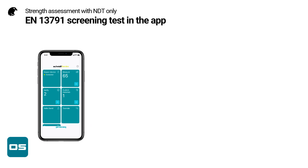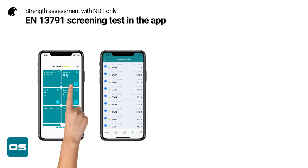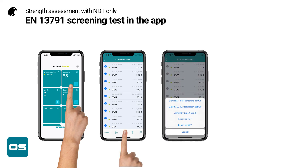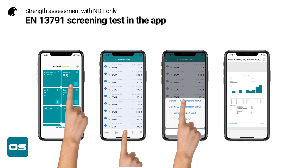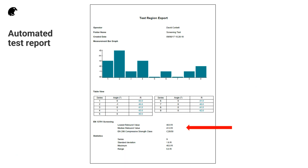The screening test I've just described has been integrated into the Schmidt Rebound Hammer app. From the file manager, we can simply select the different test locations in the test region and then choose to export the EN 13791 screening test as a PDF file. The PDF file is generated automatically and can be saved or shared as desired. Here we can see the automated test report with the compressive strength class indicated.